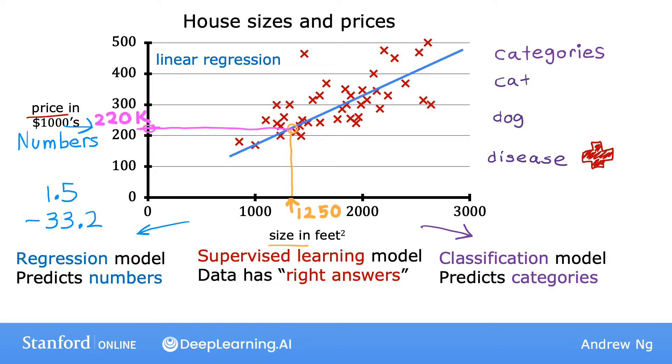So as a reminder about the difference between classification and regression, in classification, there are only a small number of possible outputs. If your model is recognizing cats versus dogs, that's two possible outputs. Or maybe you're trying to recognize any of 10 possible medical conditions in a patient. So if there's a discrete, finite set of possible outputs, we call it a classification problem. Whereas in regression, there are infinitely many possible numbers that the model could output.